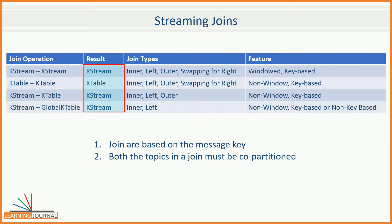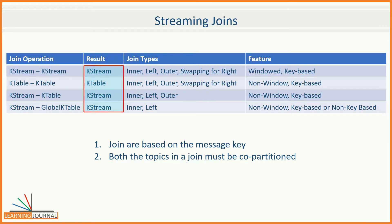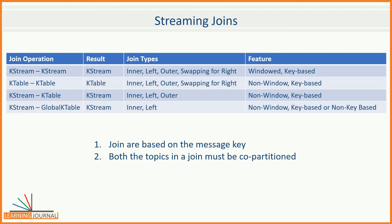I have also listed the outcome of the join operations. For example, when you join a KStream to another KStream, the result of the join is going to be a new KStream. Similarly, other outcome types are listed here. Finally, the KStream to KStream join must be a windowed join, and all others are always non-windowed joins. We will learn all this with appropriate examples, so if you still have some doubts about the joins, hold on until we create examples in the following lectures.